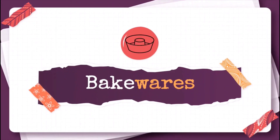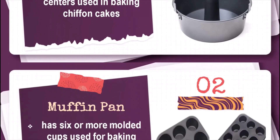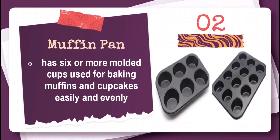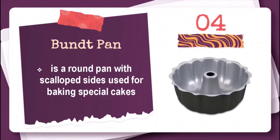Bakewares. A tube center pan has a hollow removable center used in baking chiffon cakes. Muffin pan has six or more molded cups used for baking muffins and cupcakes easily and evenly. A jelly roll pan is a shallow rectangular pan used for baking rolls. Bundt pan is a round pan with scalloped sides used for baking special cakes.